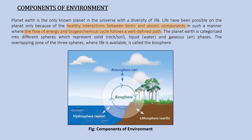Life is sustaining on Earth because there is always a definite flow of energy. Herbivores are dependent on plants and obtain energy from them; carnivores get their energy by eating herbivores. These biogeochemical cycles also follow a definite path. For example, in the water cycle, the phases always occur in a defined manner — not jumping from one step to the next — and all these things make life on Earth possible.